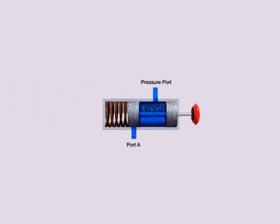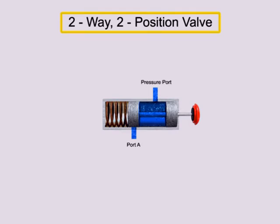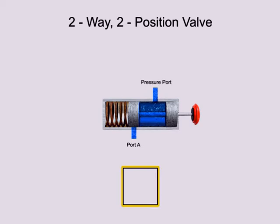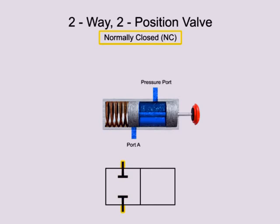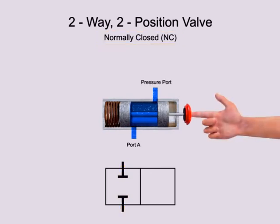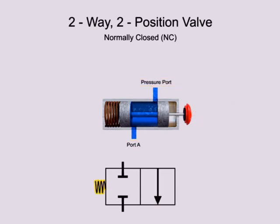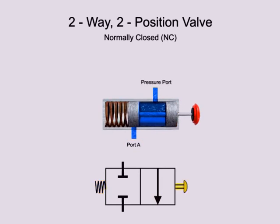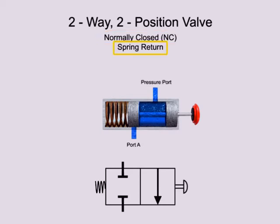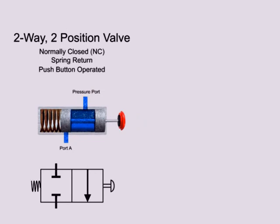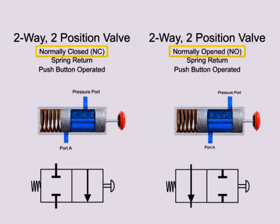Here is a similar valve to the one previously shown. It has two ports and two positions, so it is also a two-way, two-position valve. In the normal non-actuated position, both ports are blocked. Therefore, it is a normally closed valve. When the valve is actuated, fluid is allowed to flow from the pressure port to port A. A spring returns the valve to its normally closed position, and a push button actuates it to the open position. Therefore, this valve is a two-way, two-position, normally closed, spring return, push button operated valve. While it is similar to the previous example, the differences in the normal position make it a distinctly different valve.